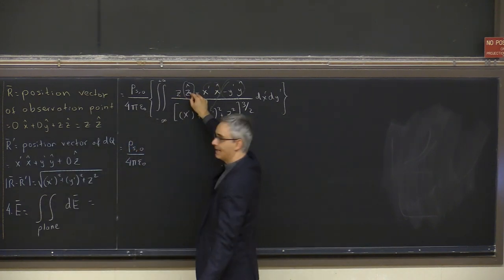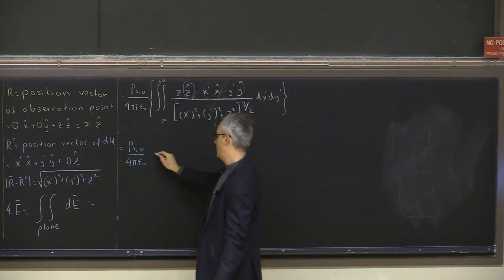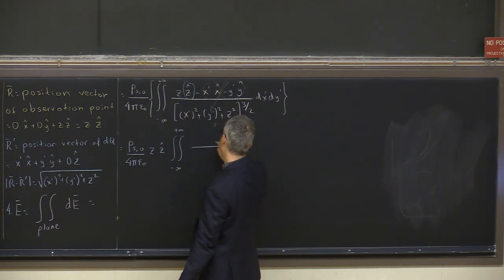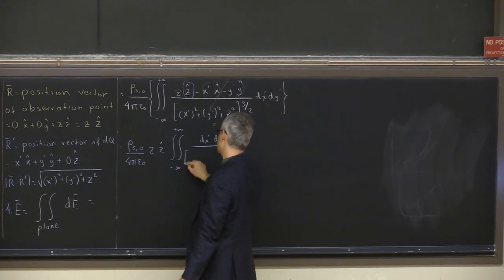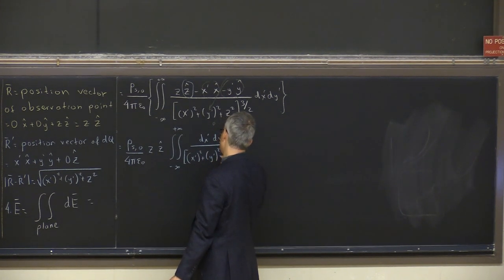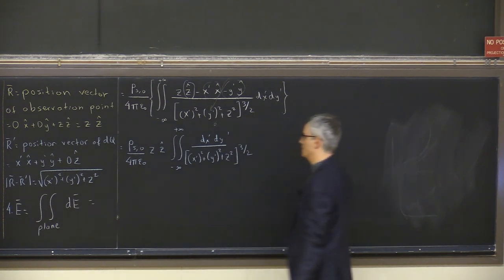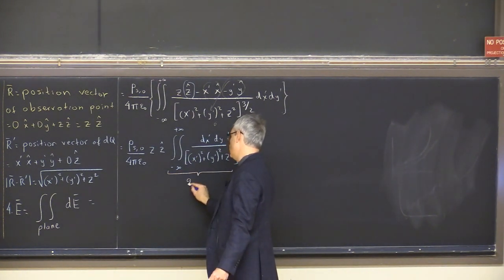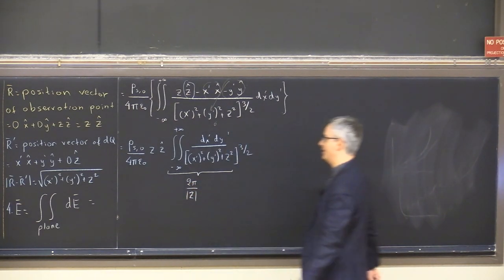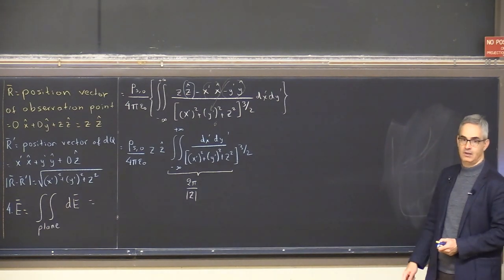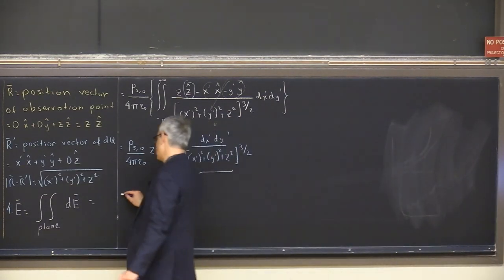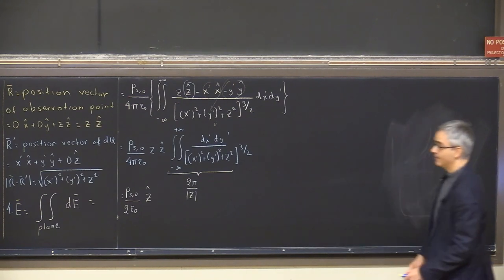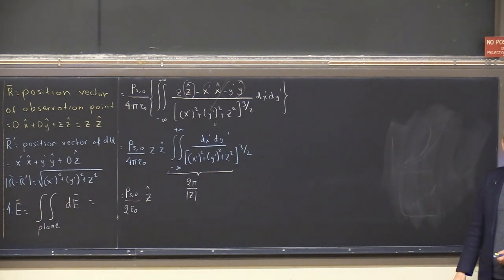Since z and ẑ are constants with respect to the integration, they can be pulled outside. The remaining integral is dx' dy' / (x'² + y'² + z²)^(3/2), which is a known integral with result 2π / |z|. I had a typo in the previous lecture — the correct result is 2π / |z|. The final electric field is E = (ρs₀ / 2ε₀) ẑ, pointing in the z-direction.